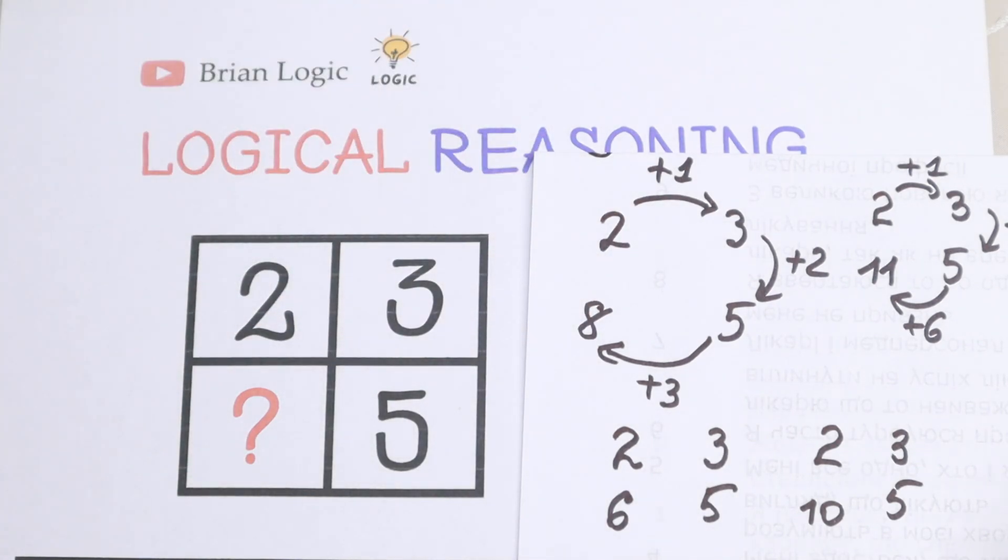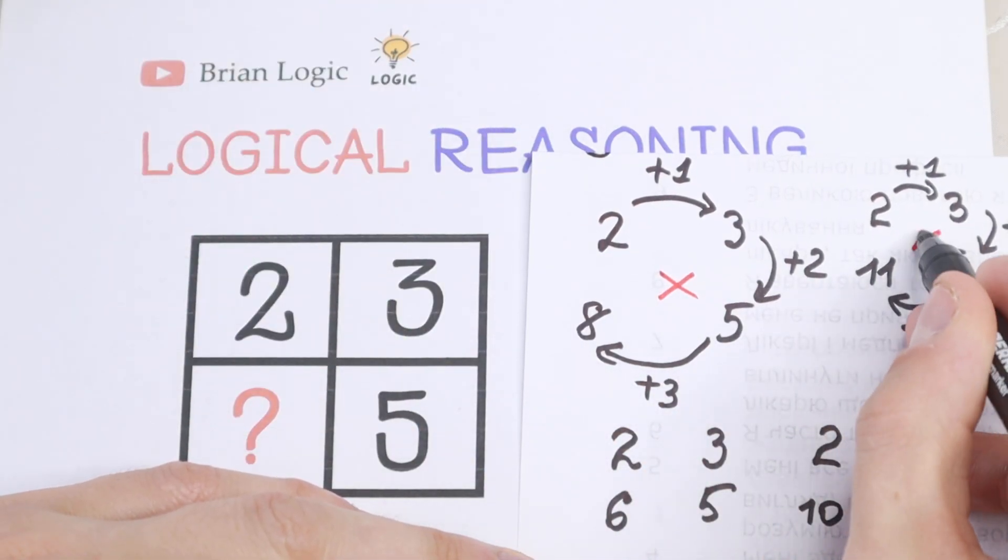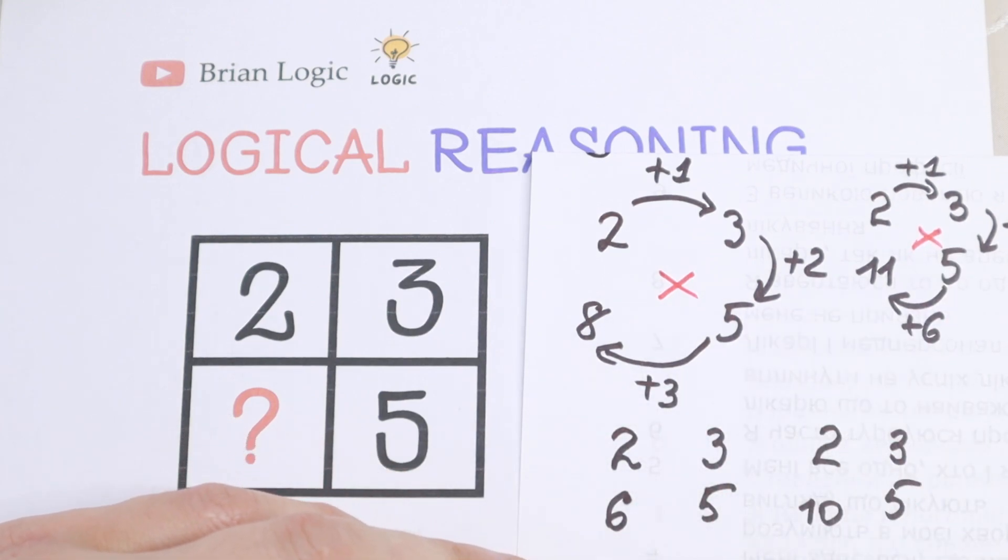We reject the first one with 8 and we reject the second one. So we rejected this case and this case because there is no pattern between these numbers. So we still have 2 cases. First one, 2, 3, 5 and 6. And the second one, 10, 2, 3, 5 and 10. So what about you? What do you think about the solution?